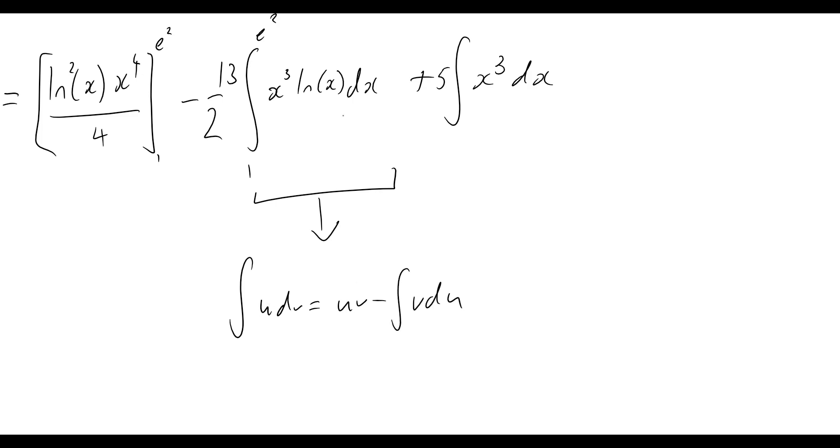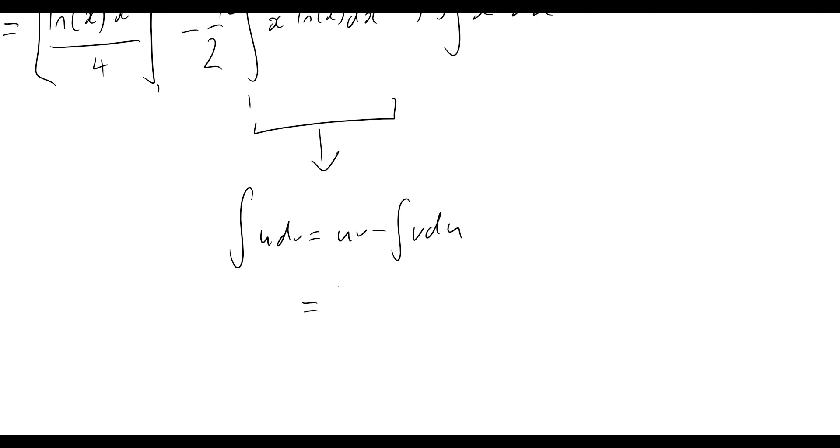So u, again, will be our natural logarithm. So we can say that this whole thing is going to be equal to the natural log, so ln of x. Now dv will become v. So we integrate the x cubed. Again, that will become x to the 4. And now all over 4. And again, evaluating this from 1 to e squared.